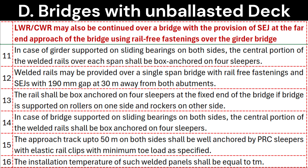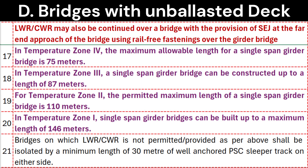15. The approach track up to 50 meters on both sides shall be well anchored by PRC sleepers with elastic rail clips with minimum toe load as specified. 16. The installation temperature of such welded panels shall be equal to Tm. 17. In temperature zone 4, the maximum allowable length for a single span girder bridge is 75 meters. 18. In temperature zone 3, a single span girder bridge can be constructed up to a length of 87 meters. 19. For temperature zone 2, the permitted maximum length of a single span girder bridge is 110 meters. 20. In temperature zone I, single span girder bridges can be built up to a maximum length of 146 meters.